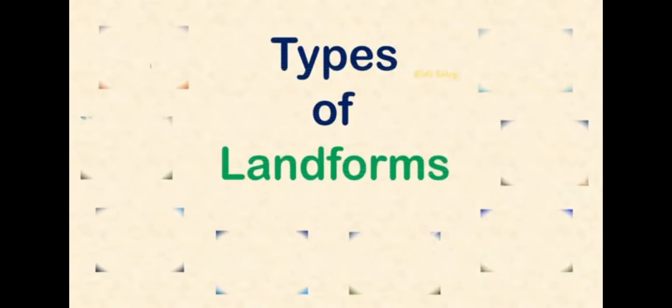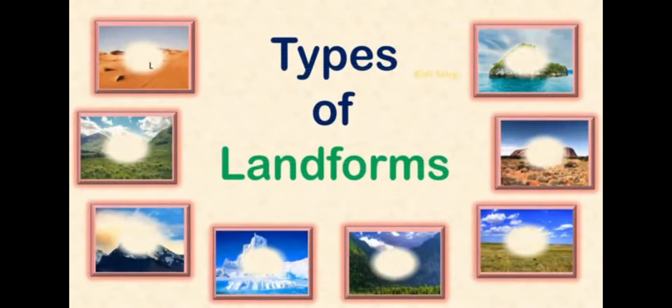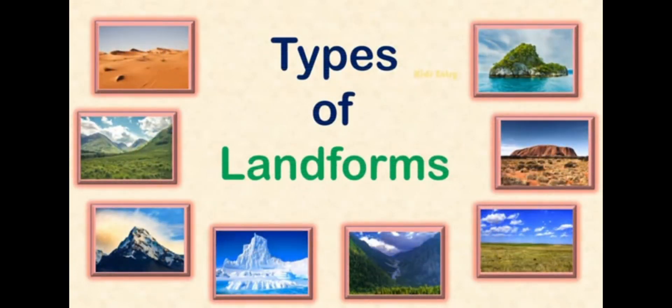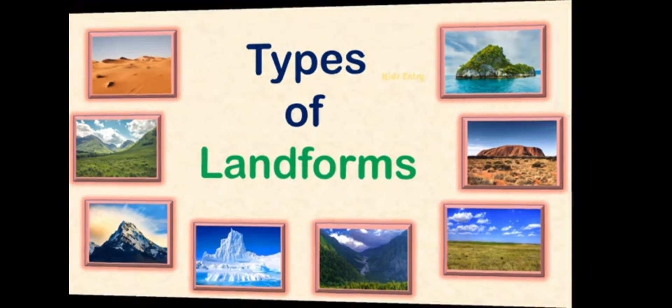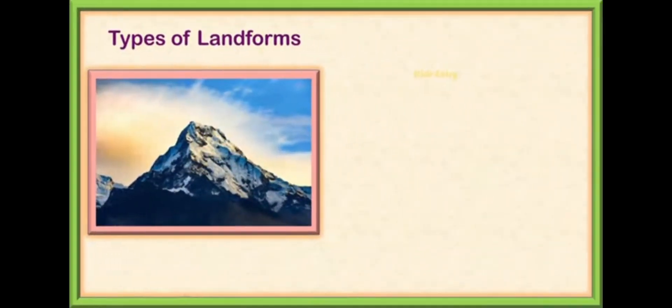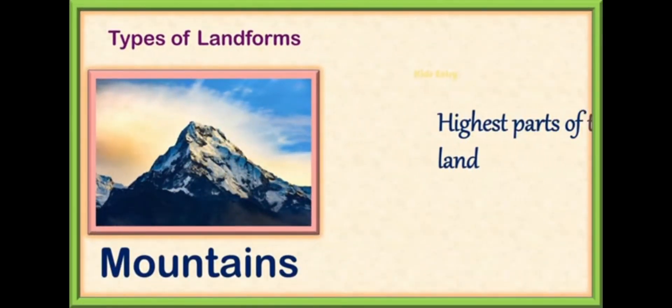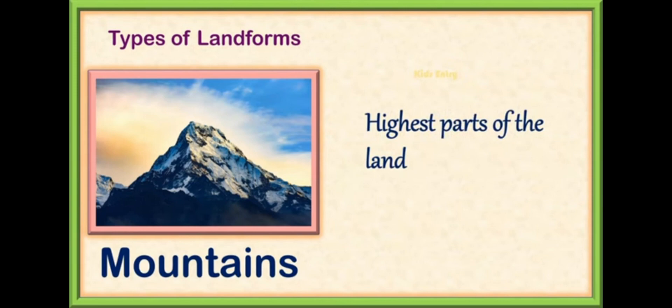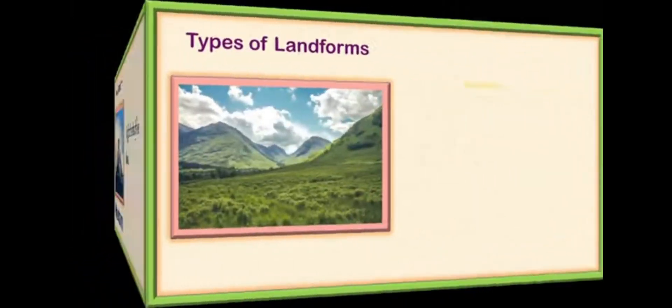Hello dear friends, today we will learn about types of landforms. The first landform is mountain. The highest part of the land is called a mountain, and the tip of the mountain is called the peak.